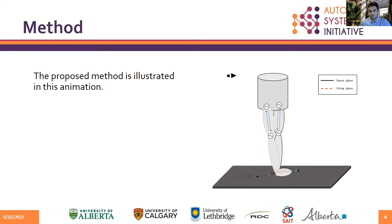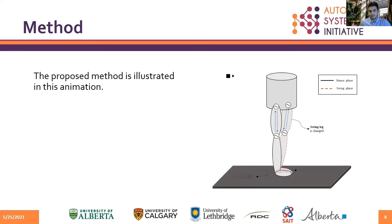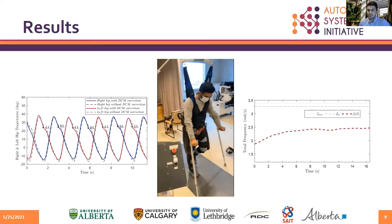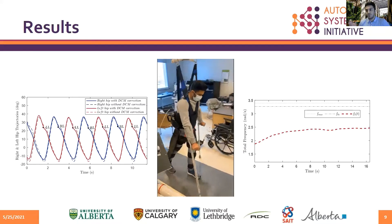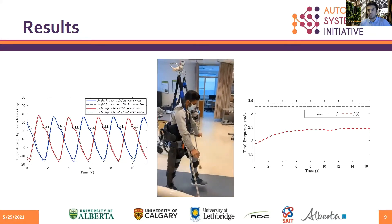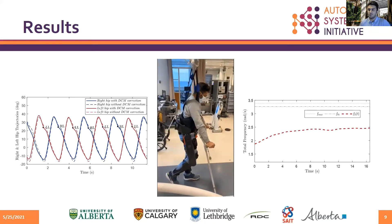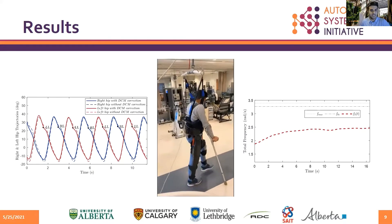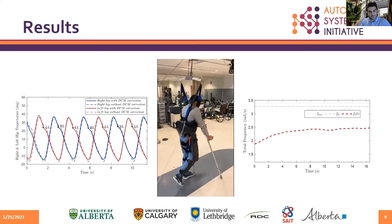The step goes on, and at the end of the step, the swing leg changes to the left one. Results are also summarized here. The applied interaction torque increased the frequency of walking from 1.8 to 2.5 radians per second, and according to the modifications applied to the hip joint trajectory to adjust the upper body position, you can see the parts of the experiments in the middle.